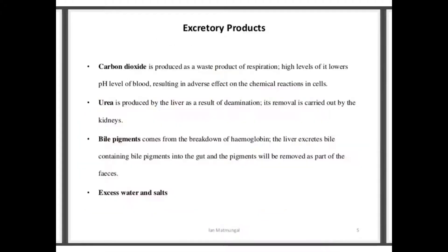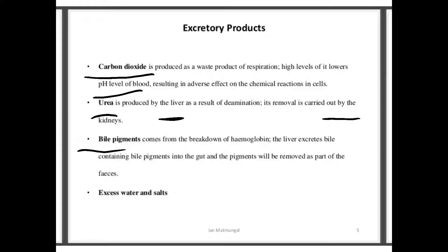Carbon dioxide is a waste product of respiration. High levels of it lower the pH of the blood, resulting in adverse effects on chemical reactions in cells. Urea is produced by the liver as a result of deamination, and its removal is carried out by the kidneys. Bile pigments come from the breakdown of haemoglobin, and the liver excretes bile. Excess water and salt are also excreted by the kidneys.